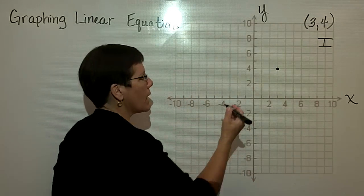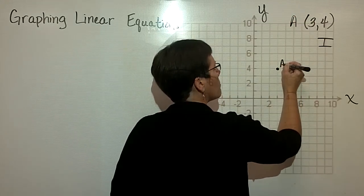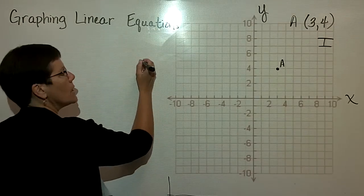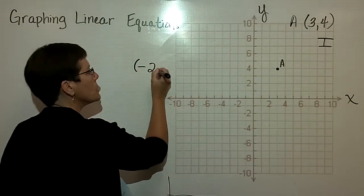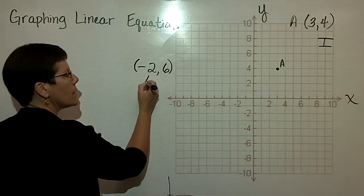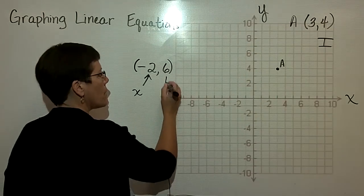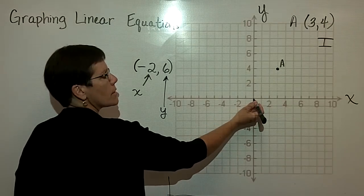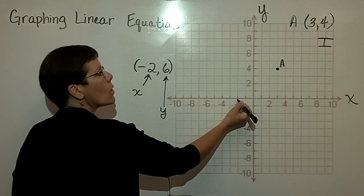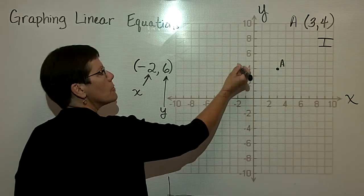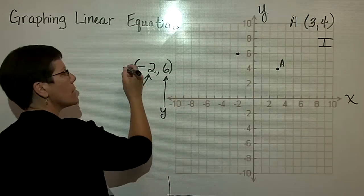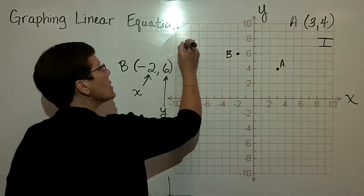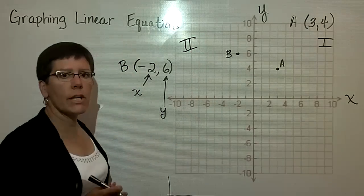Sometimes I might represent it by a letter. I'll say that this is an ordered pair called A, and mark it on the rectangular coordinate system as A. If I'd like to graph the ordered pair (-2, 6), this means my x value is negative 2 and my y value is positive 6. From the origin, I go to the left to negative 2 and then up positive 6 — 1, 2, 3, 4, 5, 6 — and that is my next ordered pair plotted. I'll call that point B.